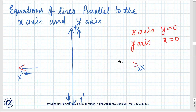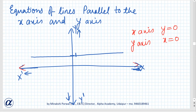Suppose we have to find a line where y equals 1. There is a line at y equals 1. Looking at any point on this line — x is 0, 1, 2, 3, 4, 5, minus 1, minus 2, minus 3, minus 4 — for all these points, the value of y is 1 only.